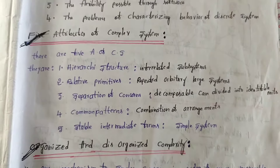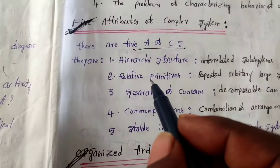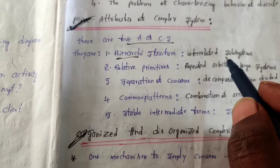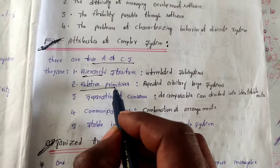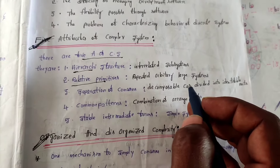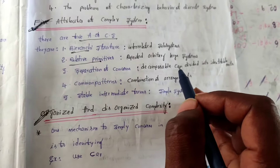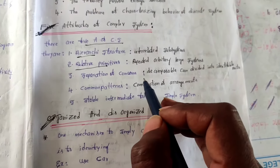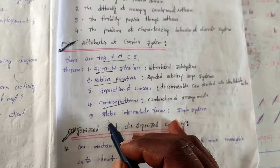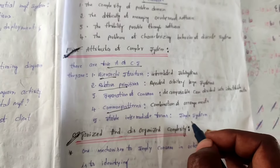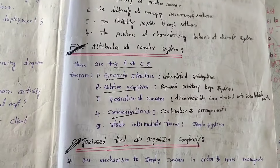The third topic is attributes of complex systems. There are five kinds of attributes. First, hierarchic structure — interrelated subsystems. Second, relative primitives — repeated arbitrary large systems. Third, separation of concerns — decomposable, divided into individual parts. Fourth, common patterns — combination of arguments. Fifth, stable intermediate forms — simple systems. These five are the attributes of complex systems in Object Oriented Analysis and Design.